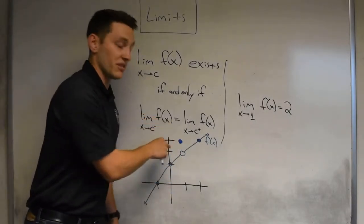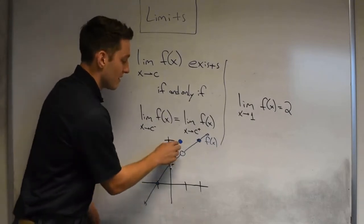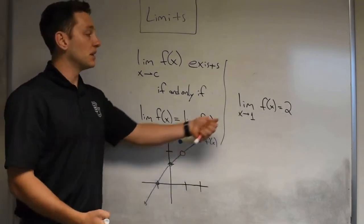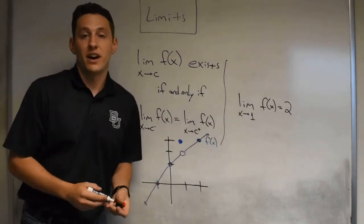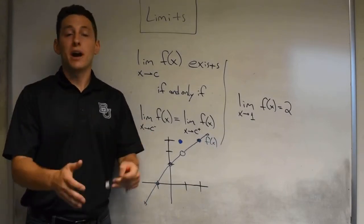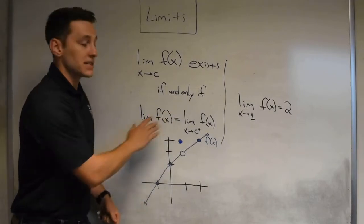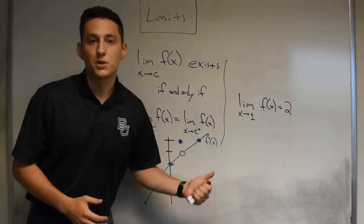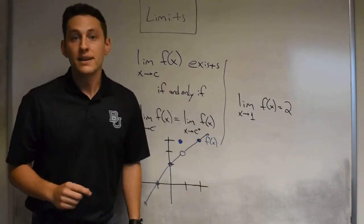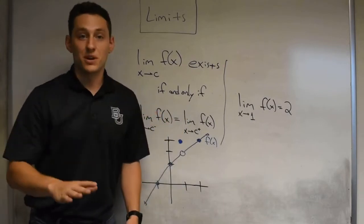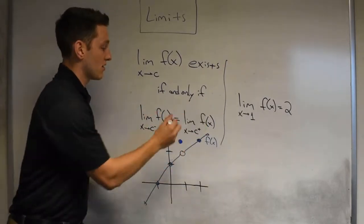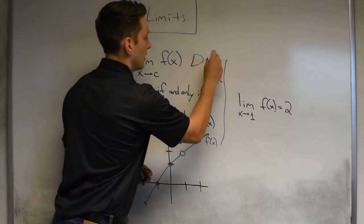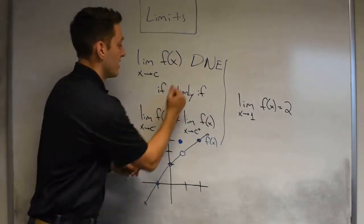But notice the real function value is 3. We'll get to when those guys actually meet up — when the full limit actually equals the function value — in the next section. For right now, what you should be aware of is just this criterion. It might even be helpful to think about it in terms of the government: if the left and the right agree, we're going to get something done. If the left and the right disagree, then nothing's going to happen. So if the limits agree, we get a full limit; if not, the limit does not exist.